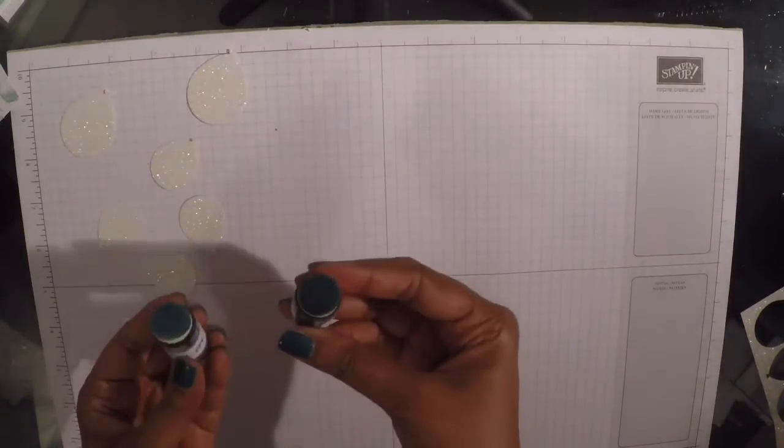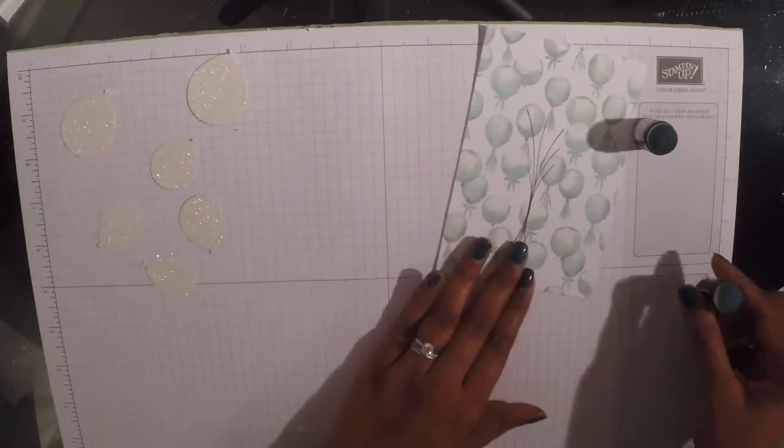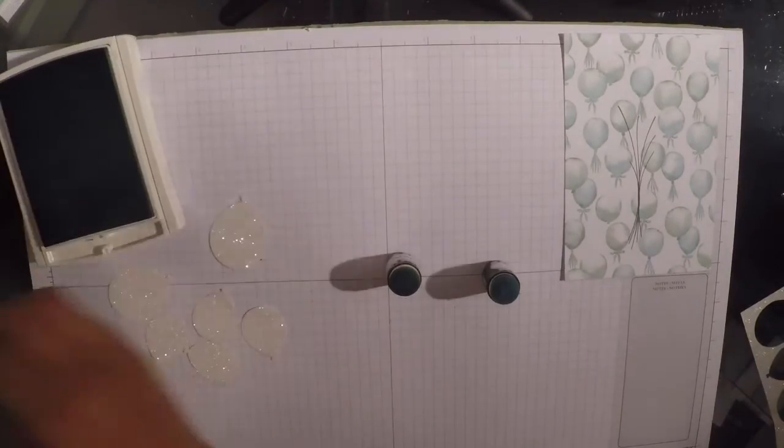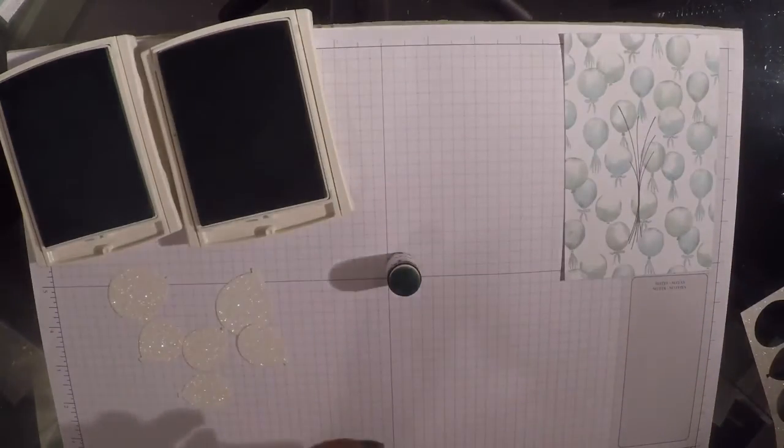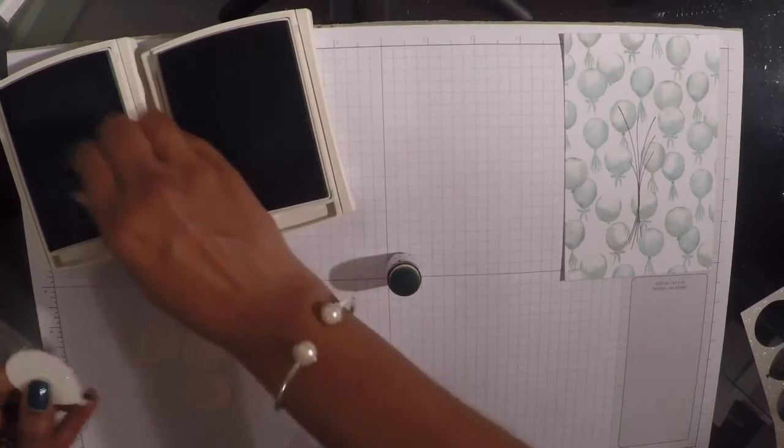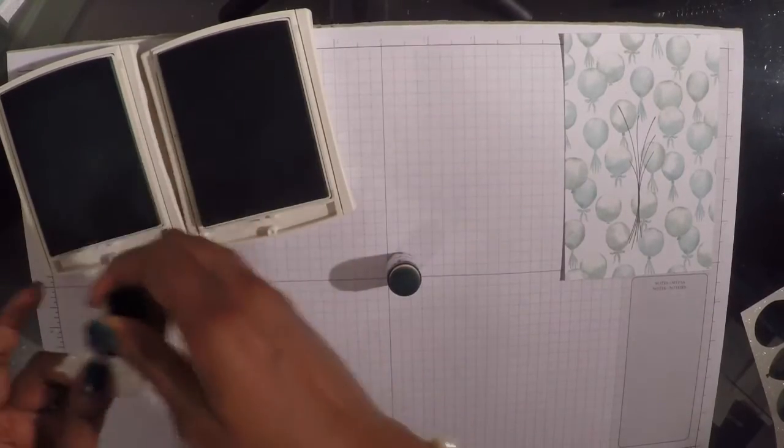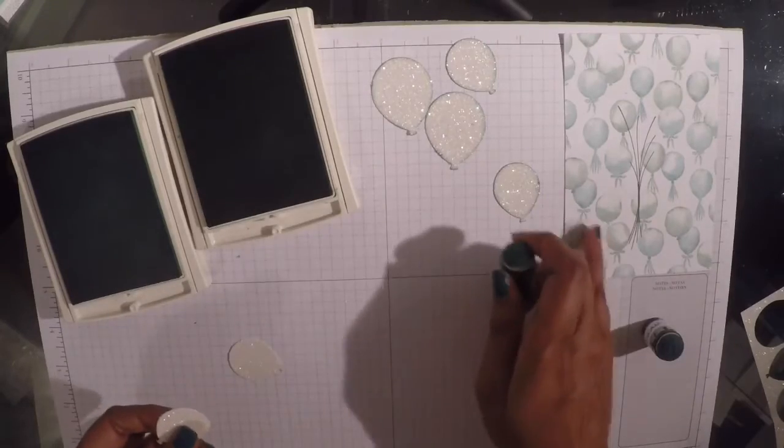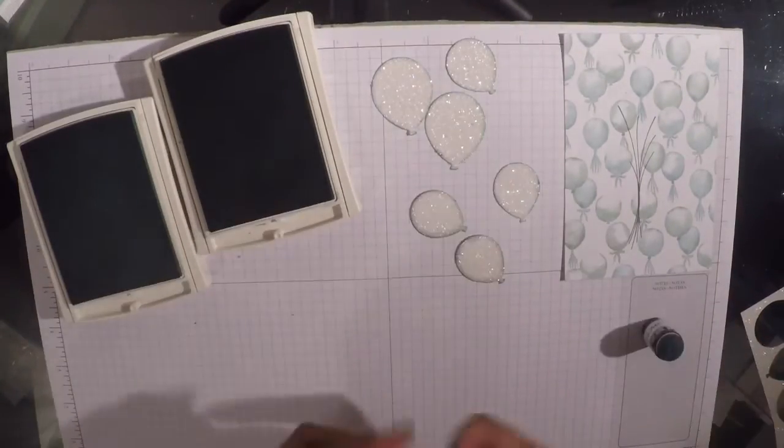Next I'm going to come in with my sponge daubers and I've got one in Pool Party and one in Mint Macaron, which is the colour of the balloons on the background of this gorgeous DSP. So I'm just going to open up my inks and I'm actually going to sponge the edges of my balloons in both of those colours. Start with Pool Party, and I'm literally just going to go around and give my balloons that edge. And then the last two I think I'm going to do in Mint Macaron because that's also on this DSP as well. And that's all our balloons edged.